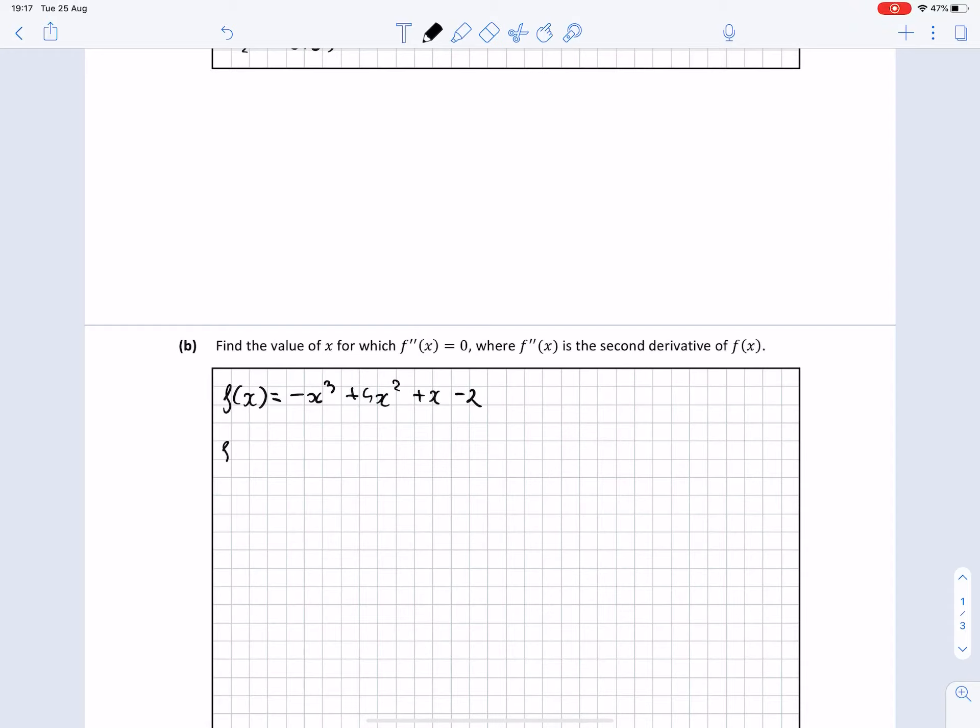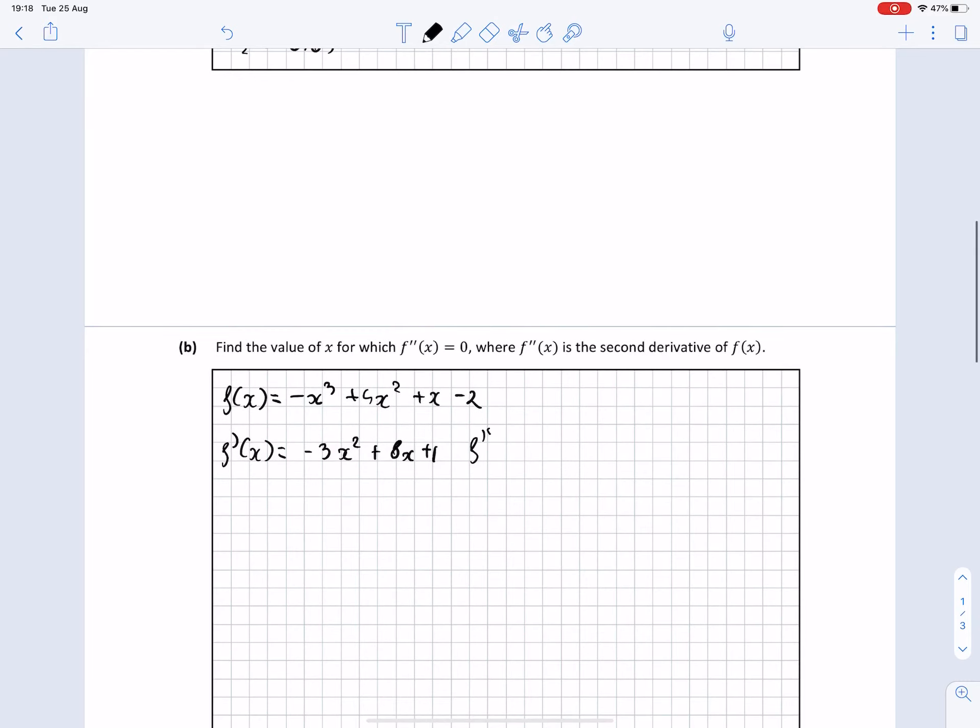So then the first derivative of this function will be equal to minus 3x squared plus 8x plus 1. And then the second derivative of this function will be equal to minus 6x plus 8.